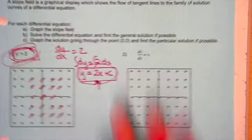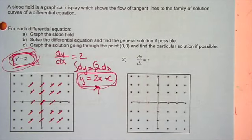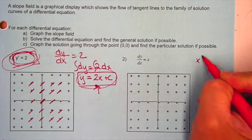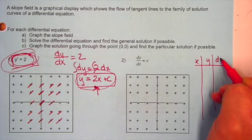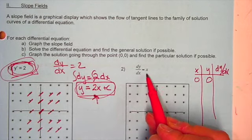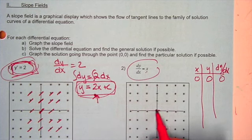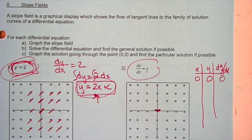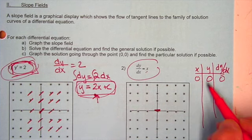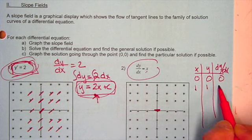Let's try another one. Look at number 2 — notice your slope is always equal to x. We're just going to start plotting points. At (0, 0), if I plug in 0 for x, my slope is 0. So I'm going to create a little tangent line segment with a slope of 0. At (1, 1), the slope is whatever the x value, which is 1, so my slope is 1, and I draw a tangent line segment with slope 1.